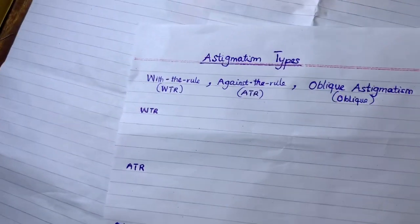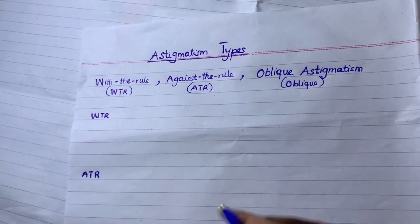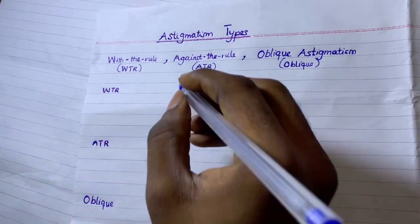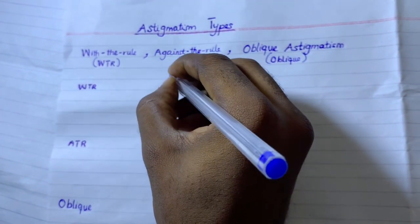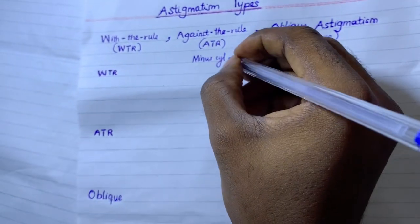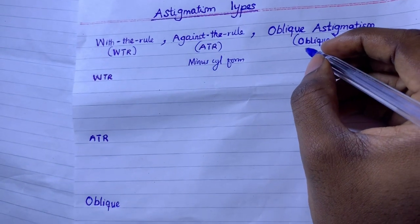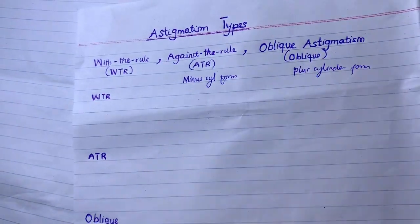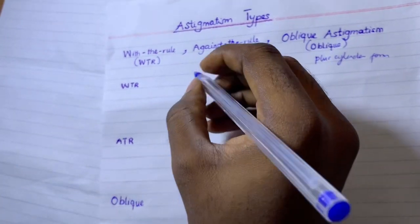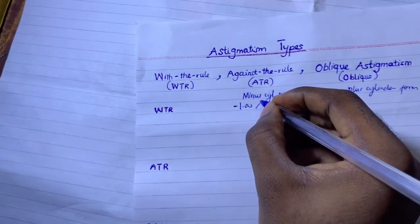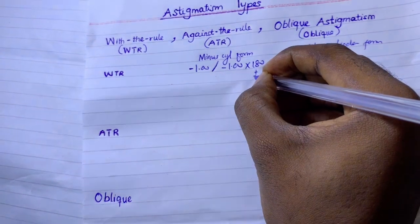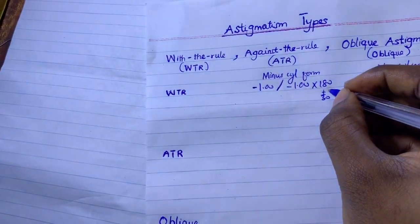Now let's look at classifying prescriptions. We know that lens prescriptions can be in plus cylinder form or minus cylinder form. For with-the-rule astigmatism in minus cylinder form — for example, minus one combined with minus one, axis 180 plus or minus 30 — the axis can range from 0 to 30 or 150 to 180.